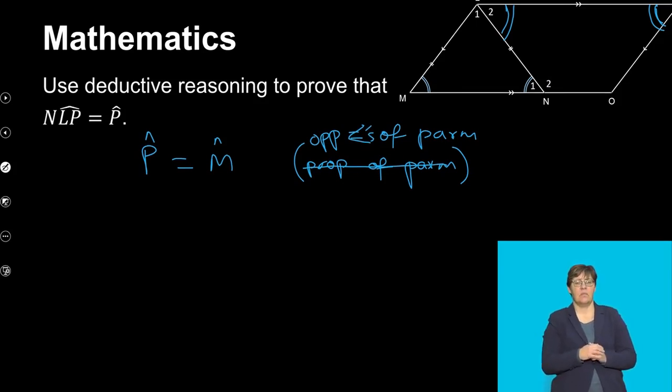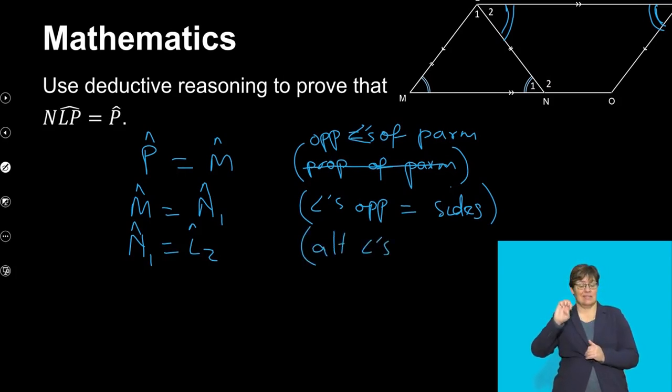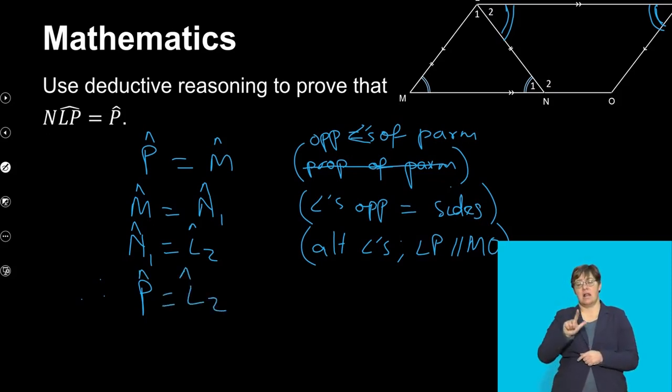But now I also know that the angle M is equals to angle N1. And this is because its angles opposite equal sides. And then from there I know that N1 is equals to L2. And my reason for this will be alternate angles because LP is parallel to MO. As a result, I know that P is equal to L2.